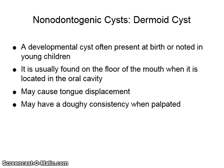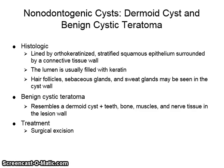The dermoid cyst is a developmental cyst often present at birth or noted in young children. It is usually found on the floor of the mouth when located in the oral cavity and may cause tongue displacement. It may have a doughy consistency when palpated. Histologically, the dermoid cyst is lined with orthokeratinized stratified squamous epithelium surrounded by a connective tissue wall. The lumen is usually filled with keratin. Hair follicles, sebaceous glands, and sweat glands may be seen in the cyst wall.